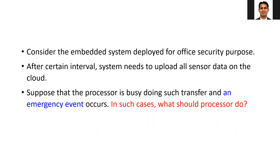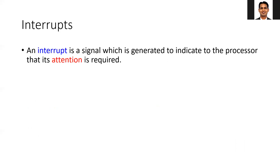Say that an emergency event has happened. In that case, since the processor is busy with the data uploading task, it may not have time to look at this emergency event. It may look at it after a certain time, which may be significantly longer. So in this case, how should we inform the processor that there is an emergency event and its attention is needed? For that we use the interrupt.